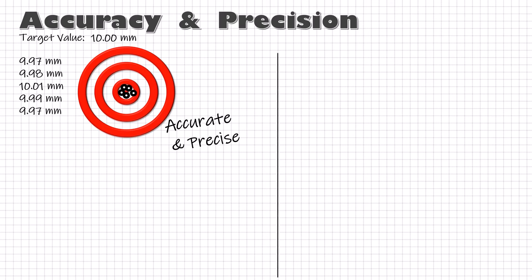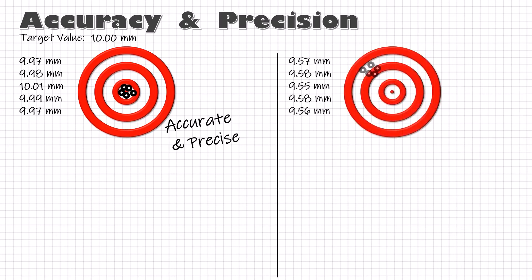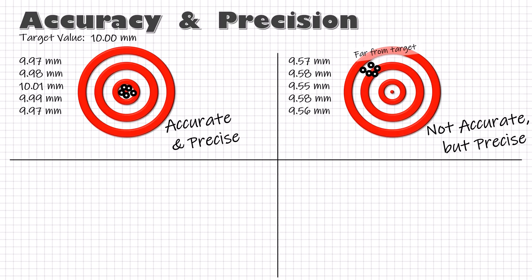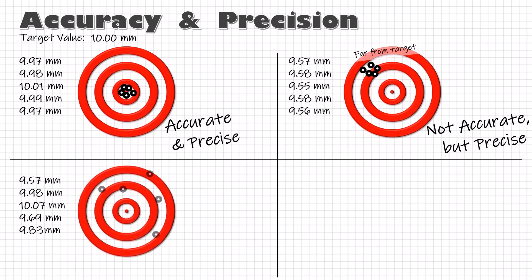Suppose the measured values are not close to the standard value, but they are close to each other — the process is not accurate, but it is still precise. And if the measured values are not close to the standard value and not close to each other, the process is neither accurate nor precise.